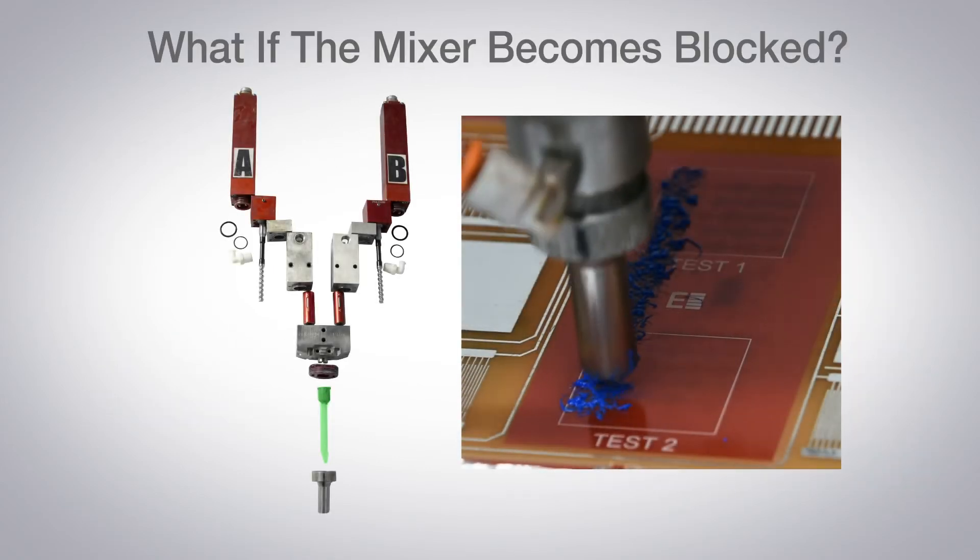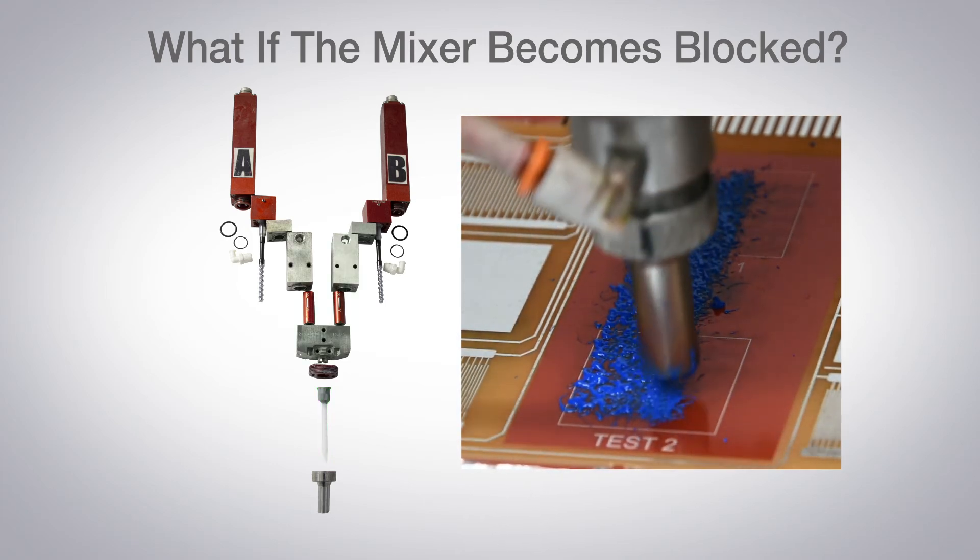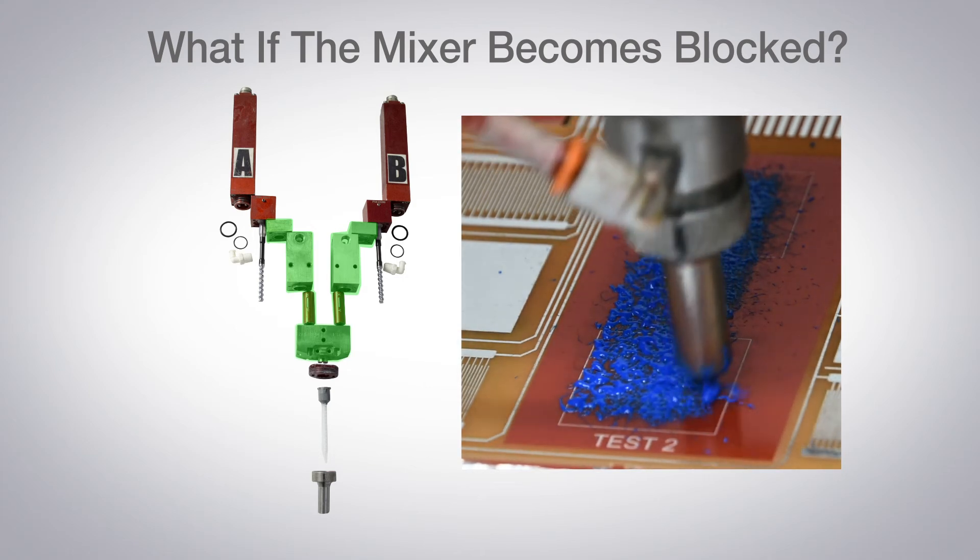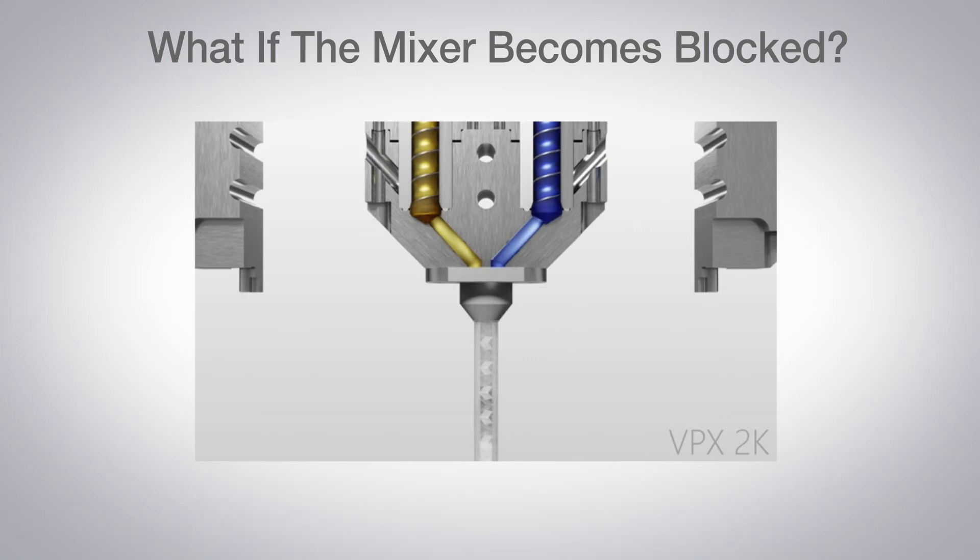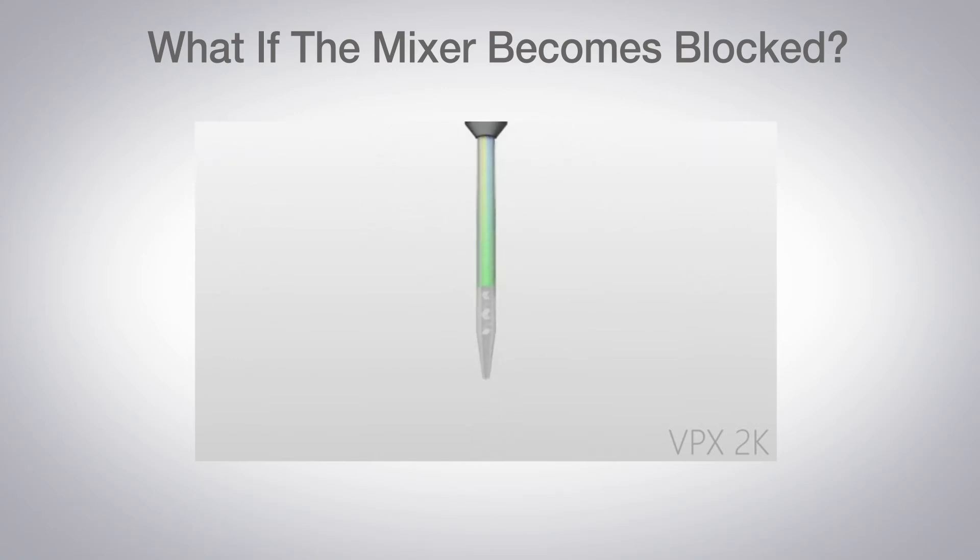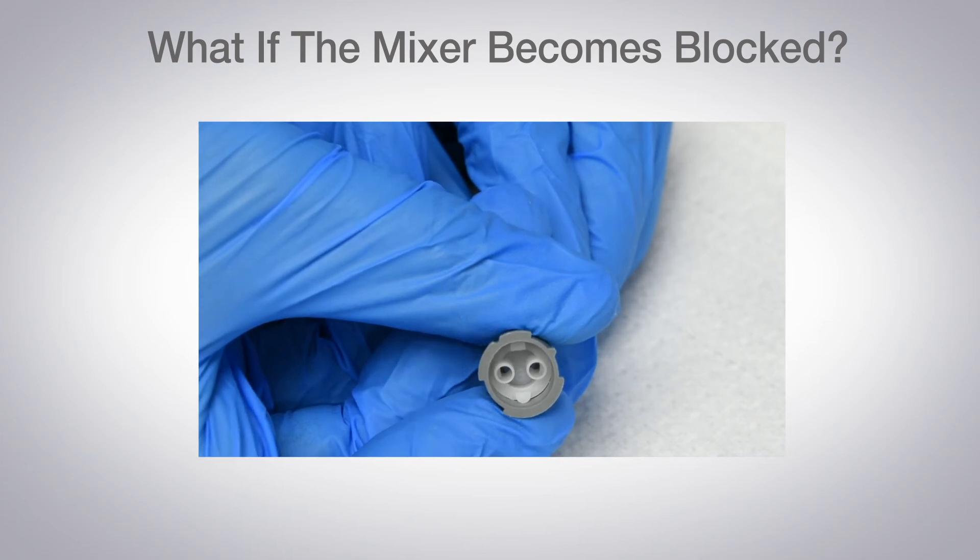What if the mixer becomes blocked? It is unlikely that blockages will occur higher up than the static mixer. Until the reaction agent is mixed with the coating, it will not cure quickly. Therefore, blockages will almost certainly be in the static mixer. The mixer is disposable and has been designed for easy replacement.